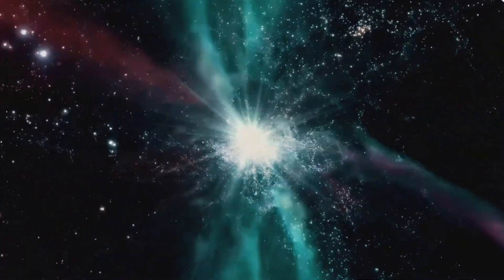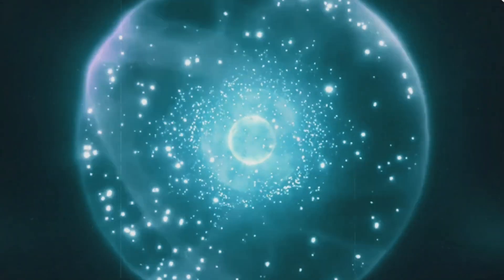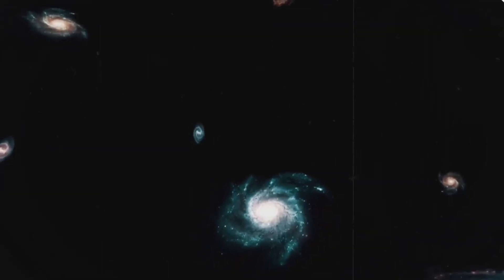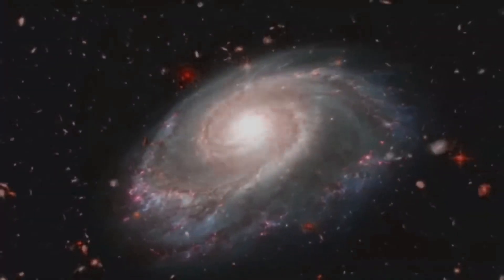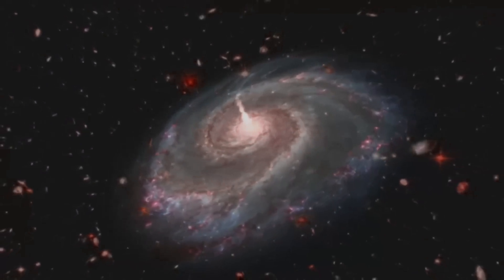For galaxies to form so quickly after the Big Bang, nearly all the gas in the universe would need to convert into stars with almost 100% efficiency, a scenario that's not just unlikely but scientifically impossible. To put this into perspective, our Milky Way galaxy took 13.7 billion years to take shape. Yet the Webb telescope has discovered galaxies comparable to the Milky Way forming only a few million years after the Big Bang. This astonishing discovery could redefine how we understand the formation of the earliest galaxies.